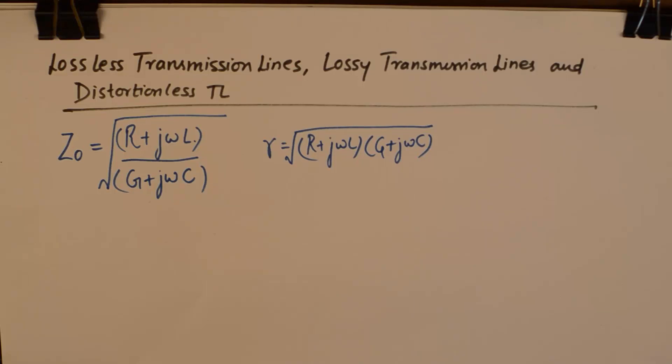Hey, what's up internet! In today's tutorial we'll continue our discussion of characteristics of transmission lines. We have three different types of transmission lines depending upon how they react to the signal: lossless transmission lines, lossy transmission lines, and distortionless transmission lines.